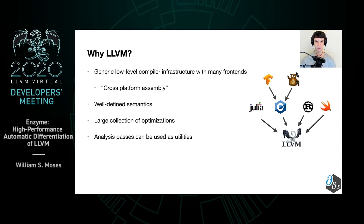One might then ask, why did we pick LLVM? It can be thought of as a cross-platform assembly that has many front-ends for a variety of languages. Because it also has well-defined semantics, we can create derivatives of the various functions with relative ease. It also has a large collection of optimization and analysis passes that can be used as utilities to make it easier to create the corresponding gradient functions.